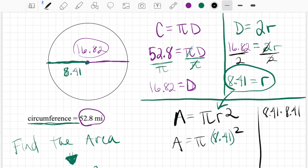I'm going to say 8.41 to the second power, or we could also say 8.41 times 8.41. And we get 70.72. So area equals pi times 70.72.